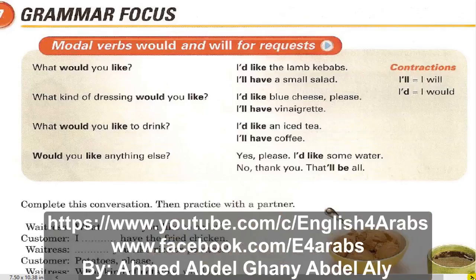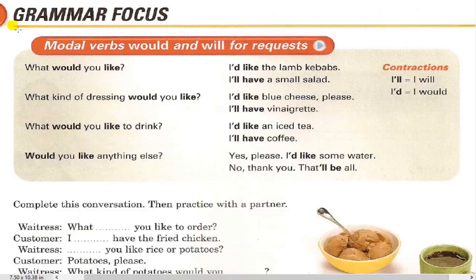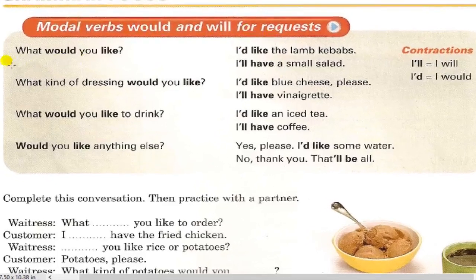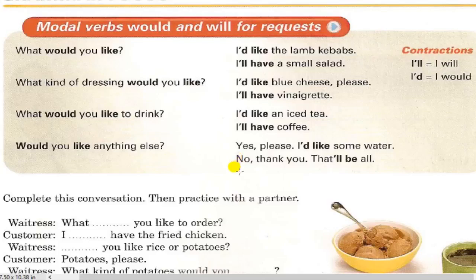Exercise number seven, grammar focus. Modal verbs 'would' and 'will' for requests. Listen, page 89. What would you like? I'd like the lamb kebabs. I'll have a small salad. What kind of dressing would you like? I'd like blue cheese, please. I'll have vinaigrette. What would you like to drink? I'd like a nice tea. I'll have coffee. Would you like anything else? Yes, please. I'd like some water. No, thank you. That'll be all. Contractions: I'll equals I will; I'd equals I would.